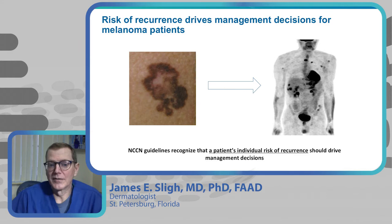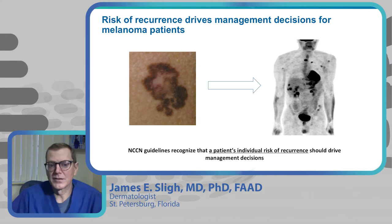The first thing we're going to talk about is the acquisition of specimens and how we make decisions for our melanoma patients. When we see something like what we're seeing here on the left, that's an obvious melanoma, and we are going to sample this in order for our pathologist to give us good information.